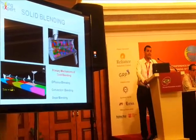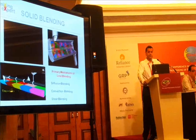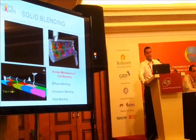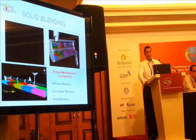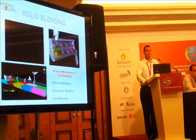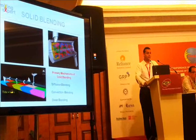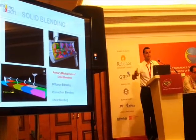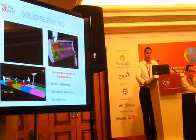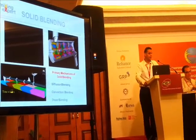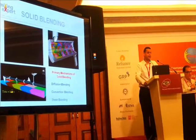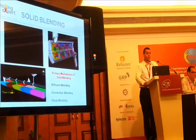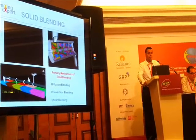The challenge with diffusion blending is that materials which are cohesive, or when you have different materials having different particle sizes and different bulk densities — that's when diffusion blending would not be adequate and then you would come to something like convective mixing.